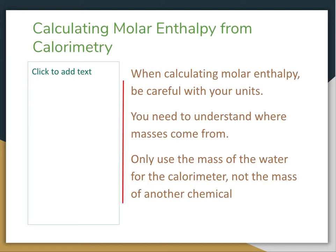When you calculate molar enthalpies in calorimetry, you have to be super careful. You need to understand where the masses are coming from, because when you do the calculation to find the molar enthalpy of the chemical, you need to make sure you're using the right volume. And that volume is going to be the same as one of the masses you used earlier.